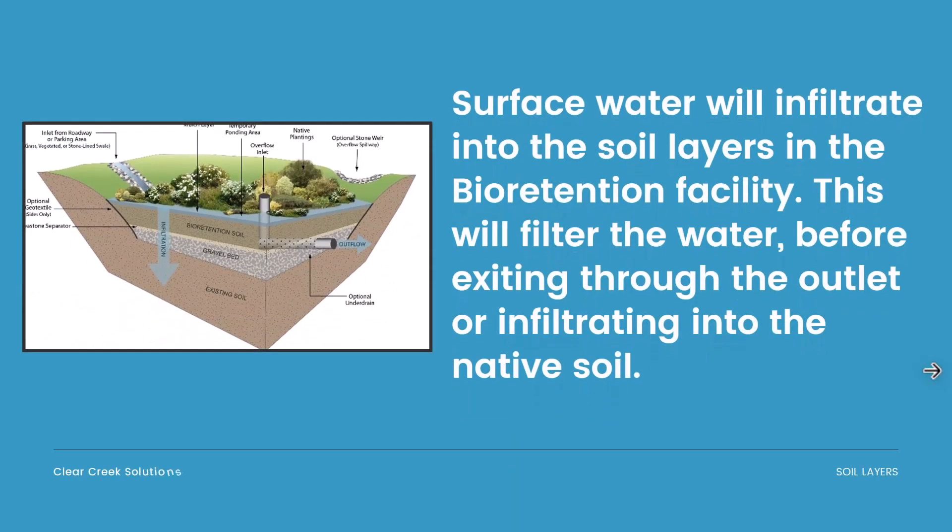Surface water will infiltrate into the soil layers in the bioretention facility. We have a diagram here on the left — this will filter the water before exiting through the outlet or infiltrating into the native soil. A bioretention facility has a couple of main goals: infiltrating stormwater from the surface, filtering it through soil layers so it gets cleaned, and then having it infiltrate into the native soil or outflow through an underdrain. This is an LID, or low impact design, and the goal is to filter stormwater and remove pollutants through natural means on site.